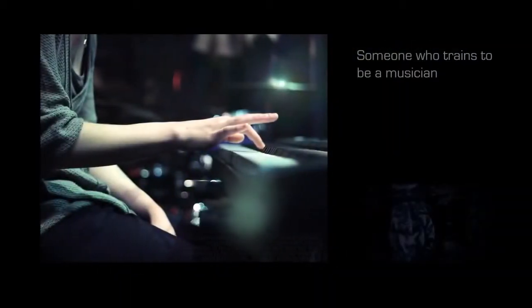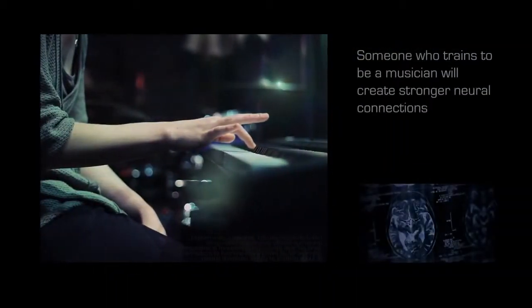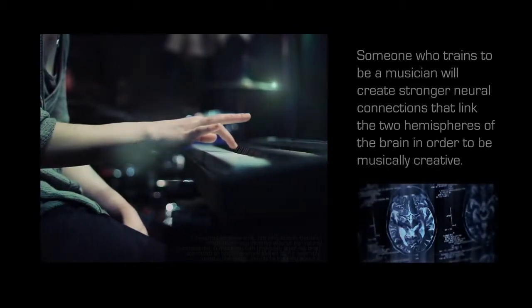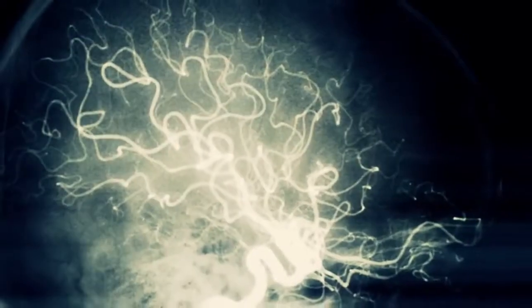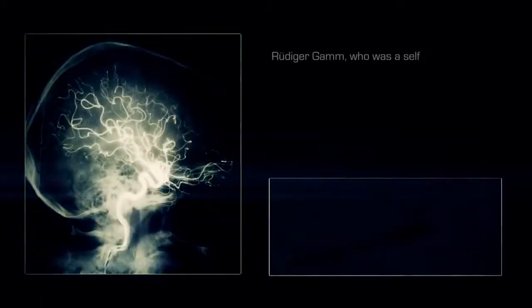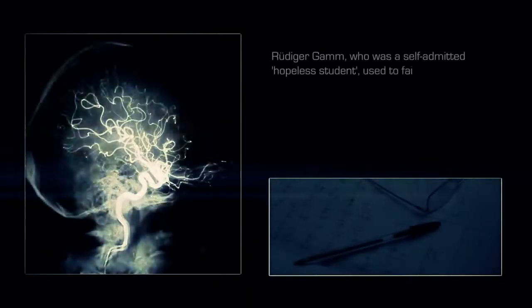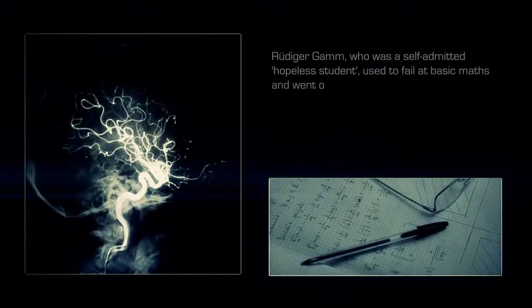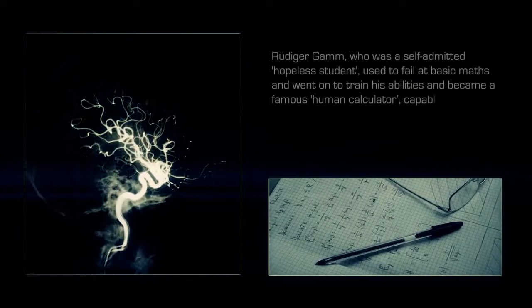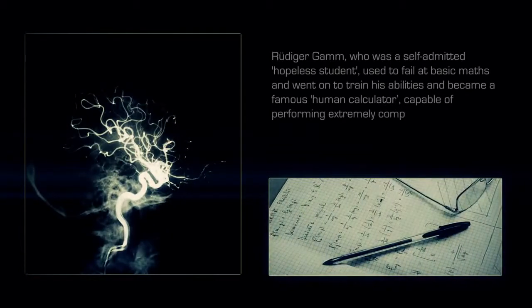Someone who trains to be a musician will create stronger neural connections that link the two hemispheres of the brain in order to be musically creative. Virtually any sort of talent or skill can be created through training. Rüdiger Gamm, who was a self-admitted hopeless student, used to fail at basic math and went on to train his abilities and became a famous human calculator, capable of performing extremely complex mathematics.